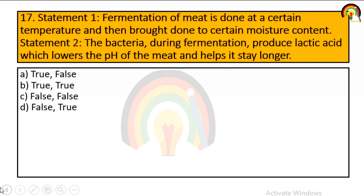Statement 1: fermentation of meat is done at a certain temperature and then brought down to a certain moisture content — true. Statement 2: bacteria during fermentation produce lactic acid, which lowers the pH of meat and helps it stay longer — also true. So both statements are true, option B.